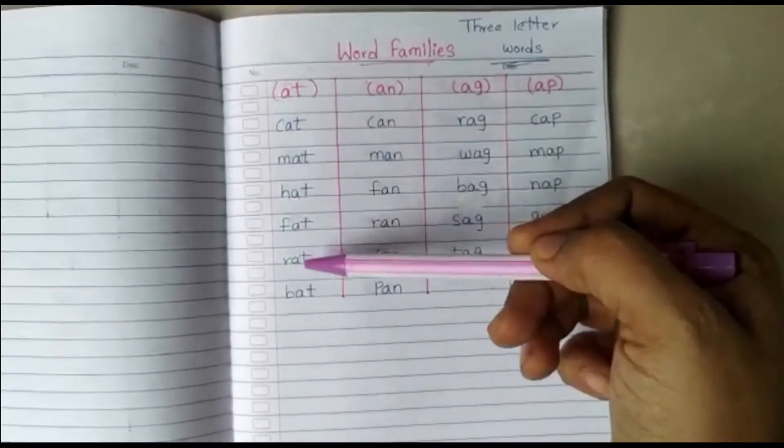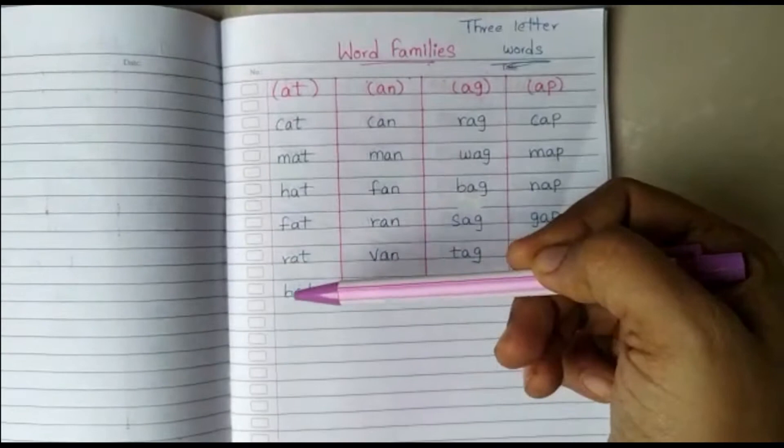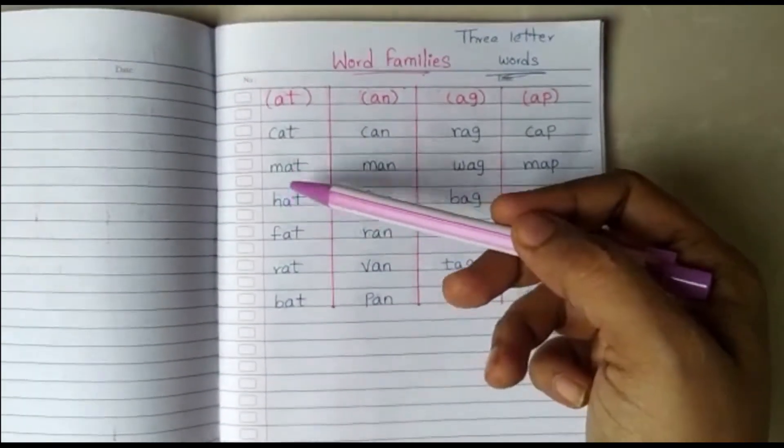Cat, mat, hat, fat, rat, bat. So, I call them as family words.